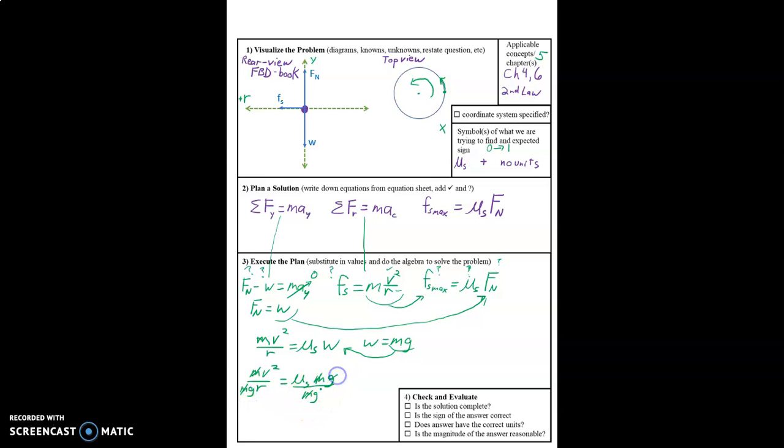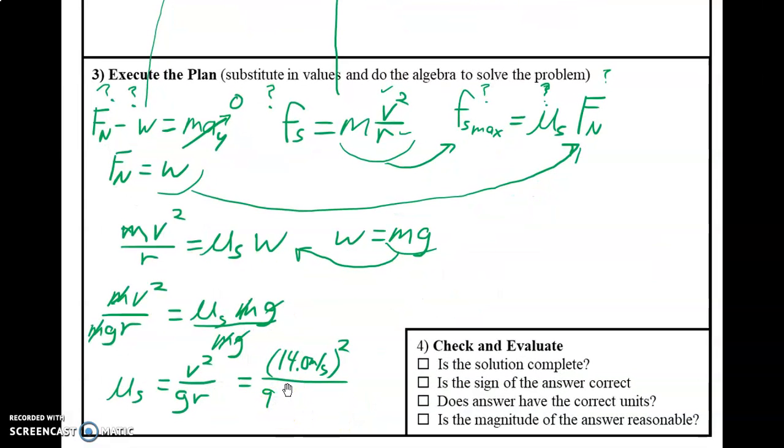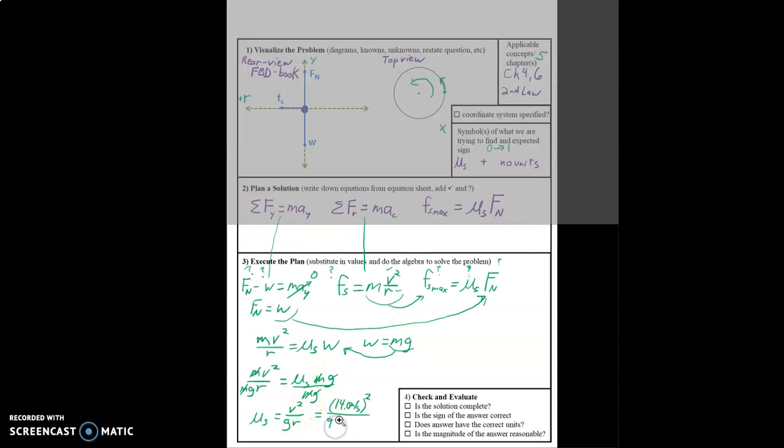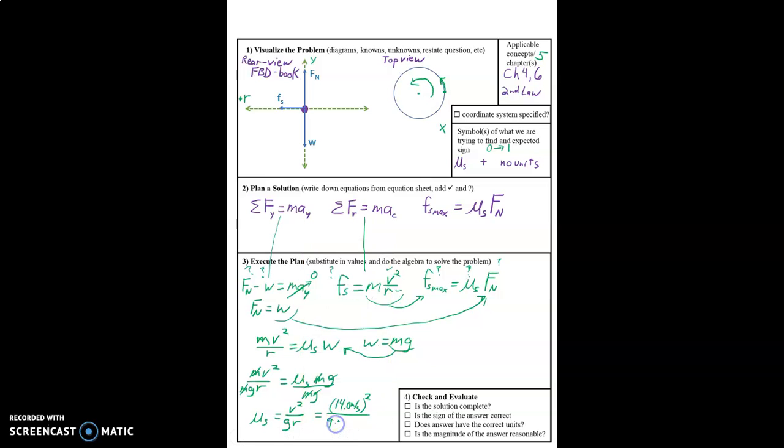So mu s equals v squared over gr which is equal to 14 meters per second squared divided by 9.8 meters per second squared times the radius which was given on the last page in the problem times 50. Now we'll calculate this. 14 squared divided by 9.8 divided by 50 equals 0.4. I kind of ran out of room there. I'll just put an arrow.